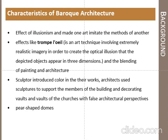The blending of painting and architecture was a key feature. Sculptors introduced color into their works, architects used sculpture to support building members, and walls of churches were decorated with false architectural perspectives. Pear-shaped domes were used. By imitating one art form into another, the effect of illusion was created in the building — that is the main characteristic of Baroque architecture.